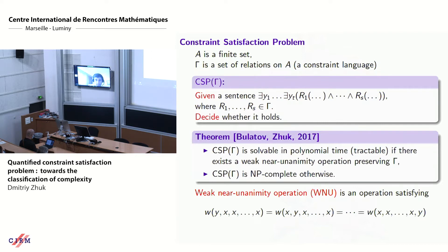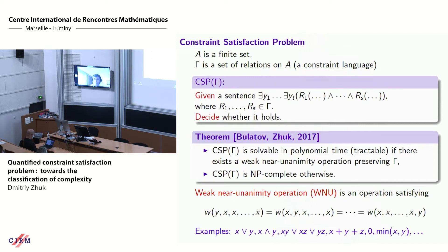If F preserves every relation from gamma, we say F is in Pol(gamma). Now we can formulate the CSP dichotomy theorem. Since 2017 we know that CSP over gamma is solvable in polynomial time if there exists a weak unanimity operation preserving gamma, and CSP over gamma is NP-complete otherwise. A weak unanimity operation is any operation satisfying: if you put X everywhere but one place, regardless of where you put Y, you get the same result. Examples include disjunction, conjunction, majority, minority, X+Y+Z mod 2, minimum, and so on. You may think of this theorem as saying: whenever we have some symmetry on our constraint language, the problem can be solved in polynomial time; otherwise it's as hard as general, so NP-complete.